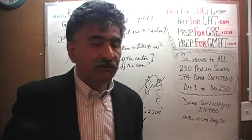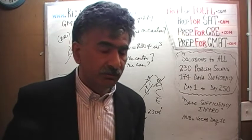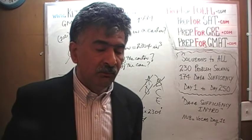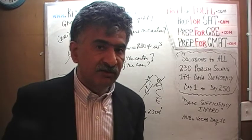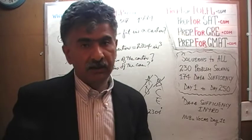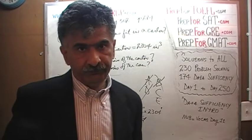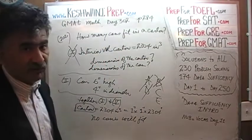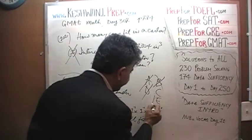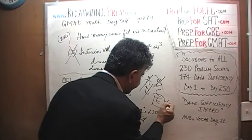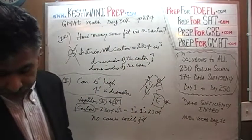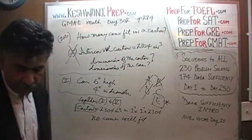Even knowing the dimensions of the can, we still need the precise dimensions of the carton itself. The answer, alas, is E. This combination is not getting us anywhere. Let's look at the next problem.